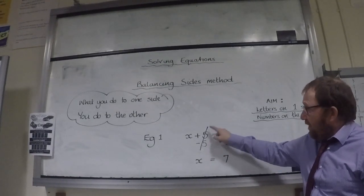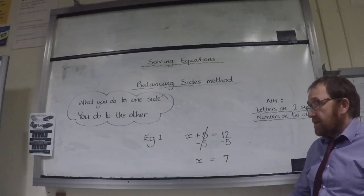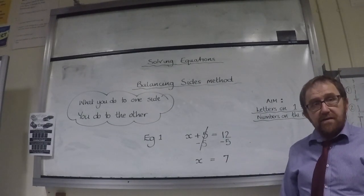Plus 5, subtract 5, cancels out to leave the x. And 12 minus 5 equals 7.